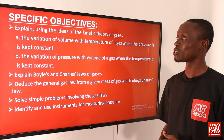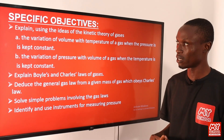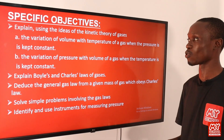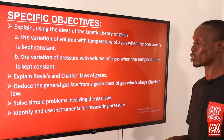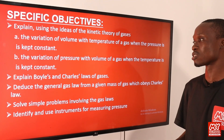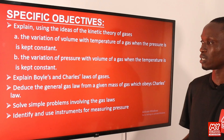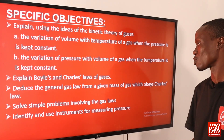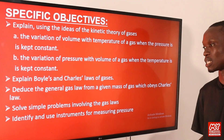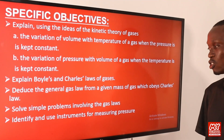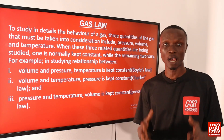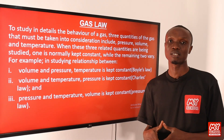Objective one: explain using the ideas of the kinetic theory of gases — (a) the variation of volume with temperature of a gas when the pressure is kept constant, and (b) the variation of pressure with volume of a gas when the temperature is kept constant. Two: explain Boyle's and Charles' laws of gases. Three: deduce the general gas law from a given mass of gas which obeys Charles' law. Four: solve simple problems involving the gas laws. Five: identify and use instruments for measuring pressure.